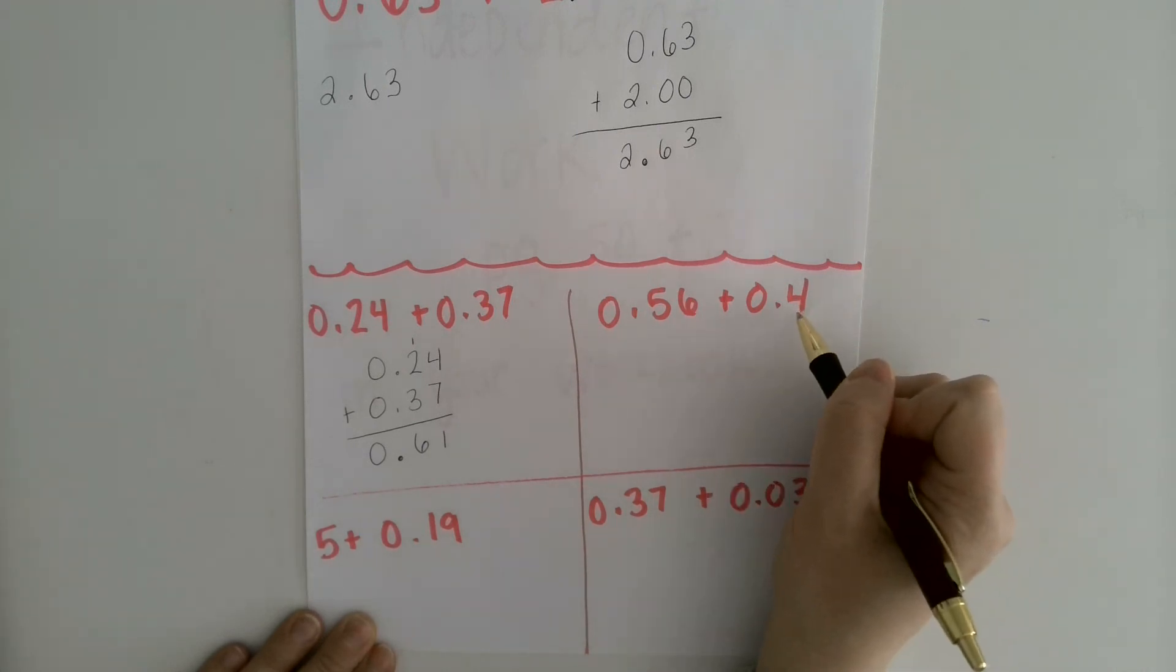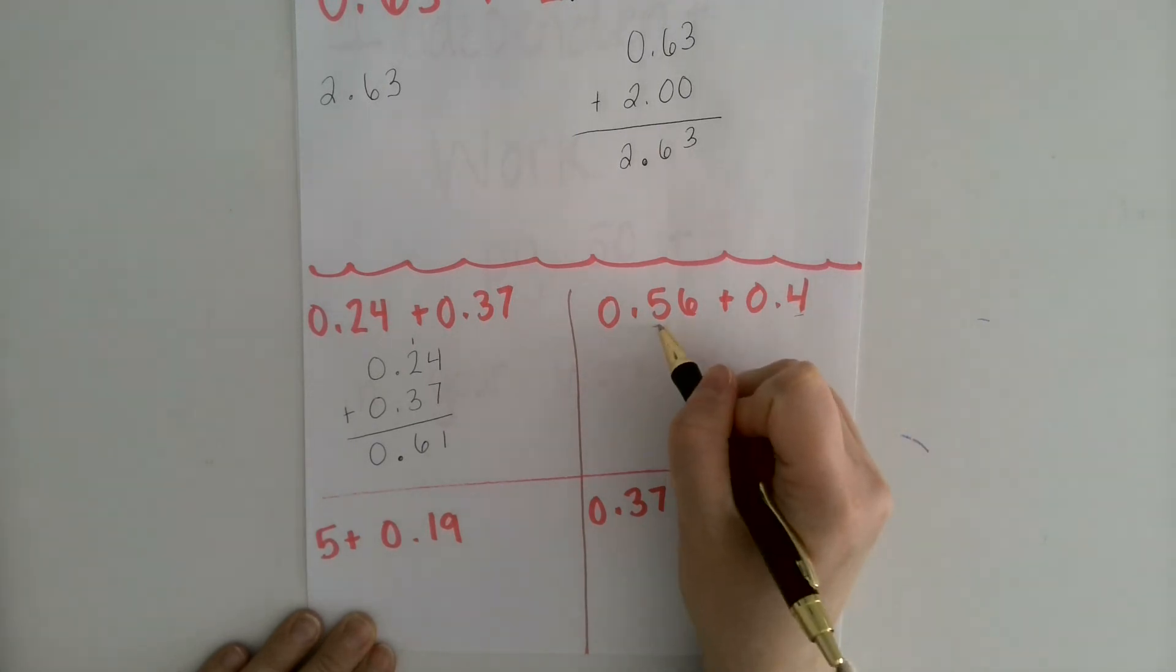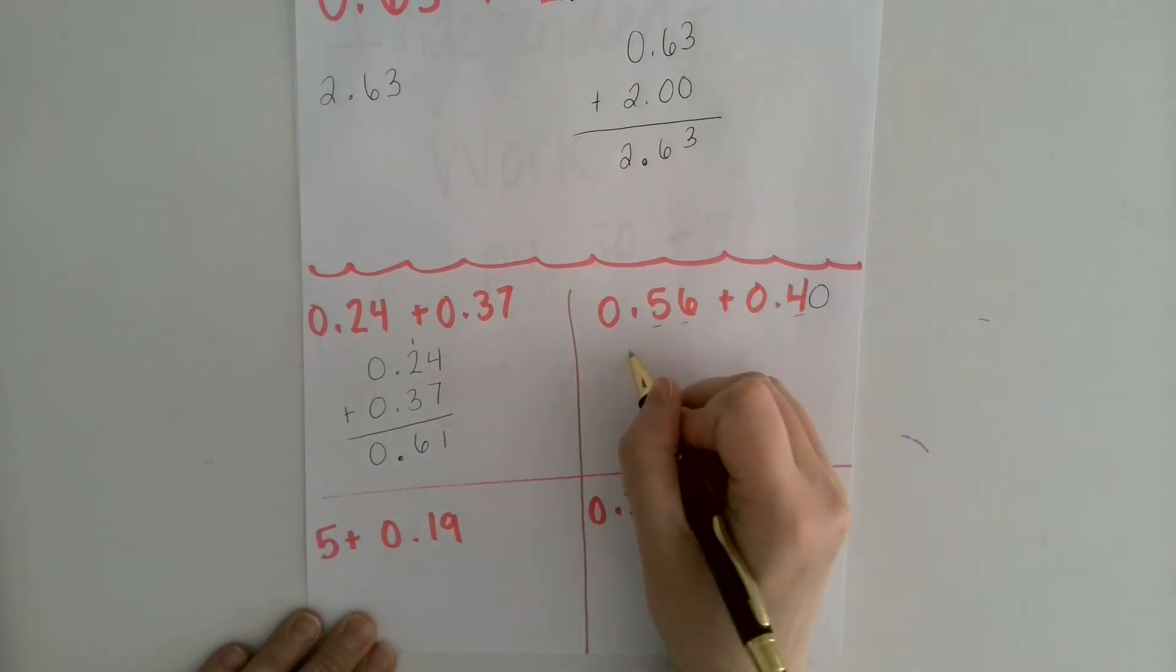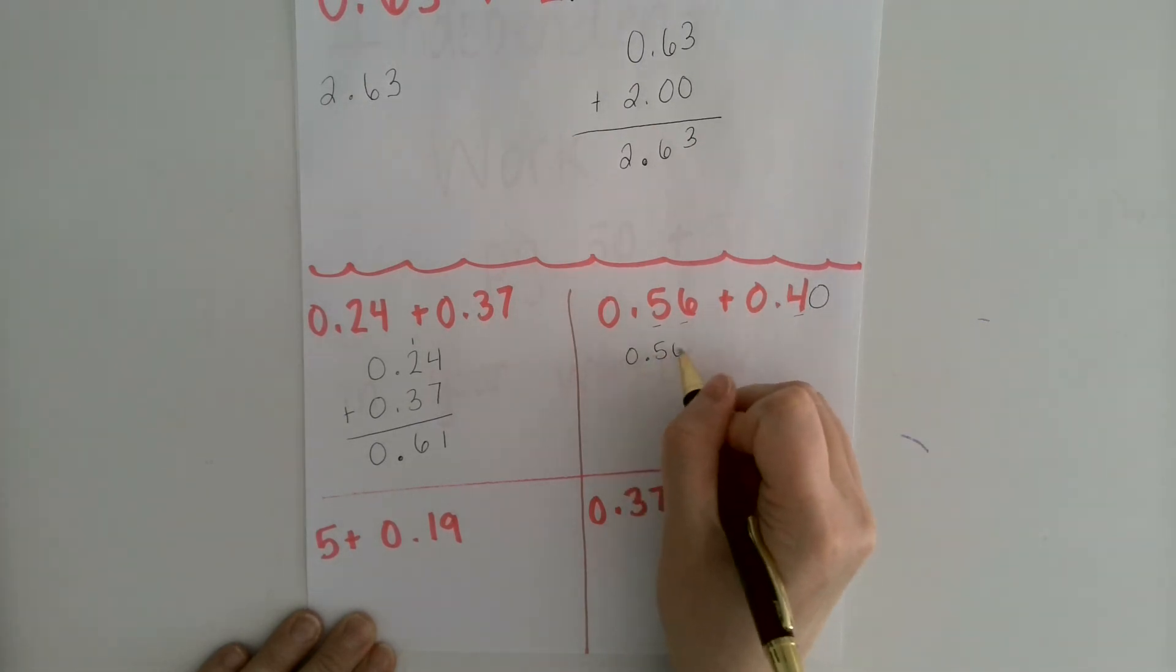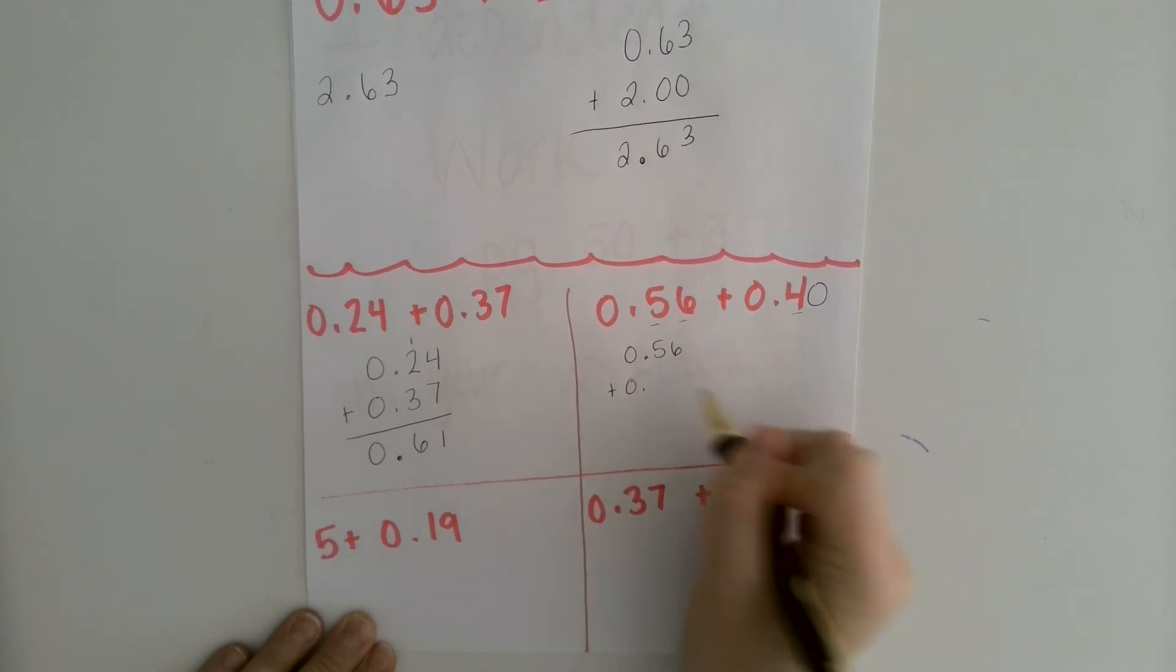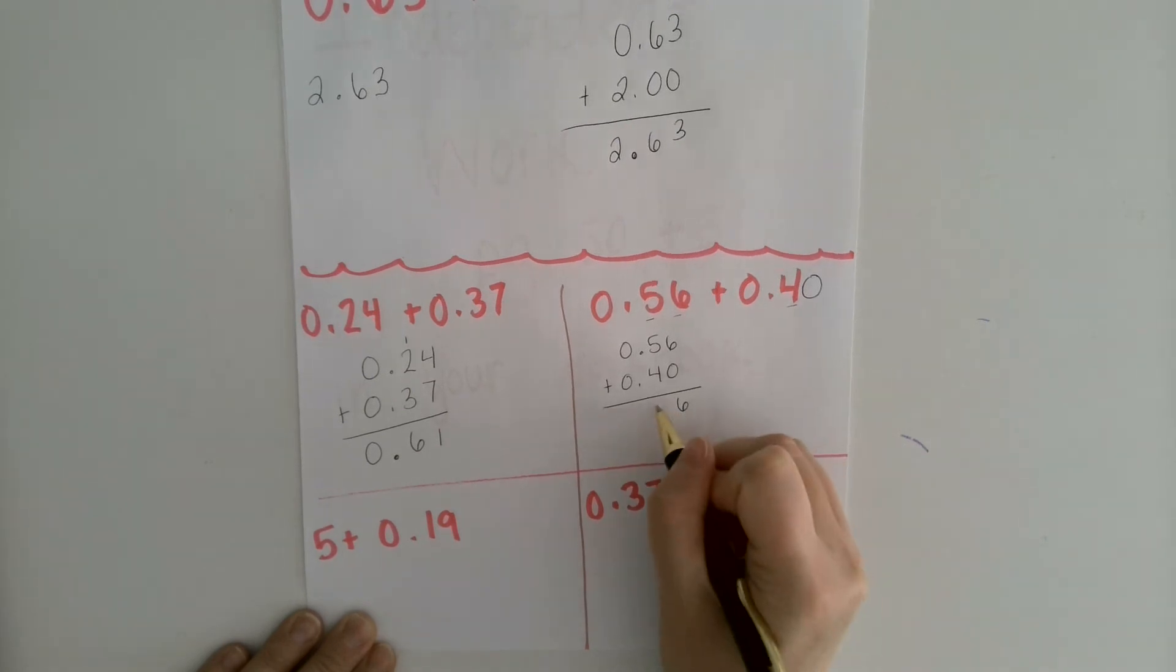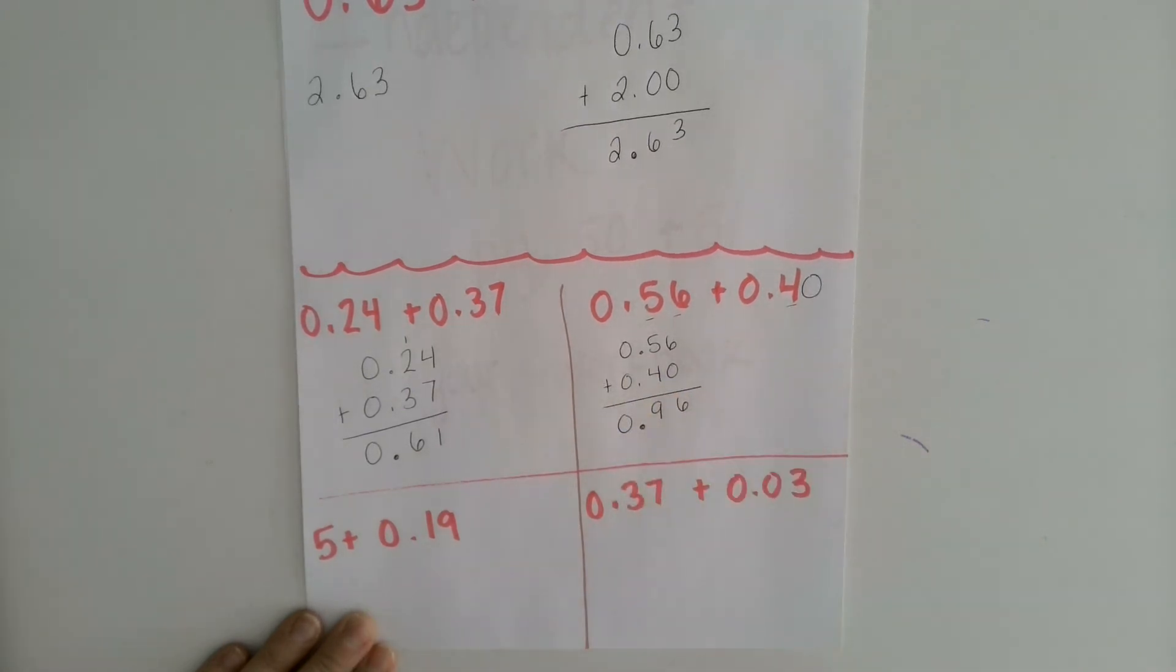Now this one, you might have noticed here you only have one place past the decimal and here you have two. So you need to add a zero to make it a little bit easier to line up. And then you can add. 6 plus 0 is 6. 5 plus 4 is 9. 0 plus 0 is 0. Decimal point comes straight down.